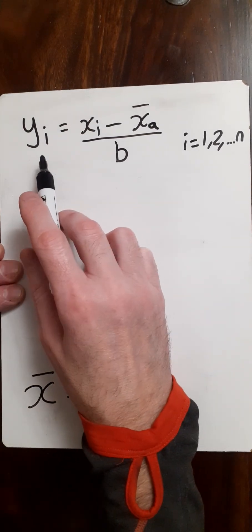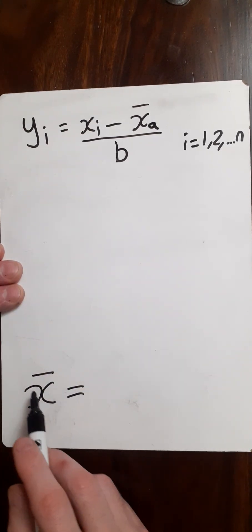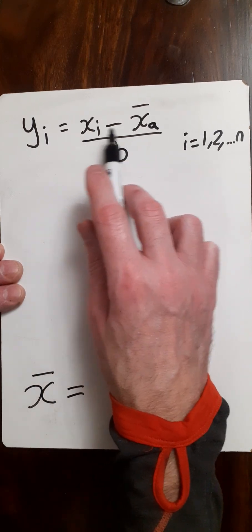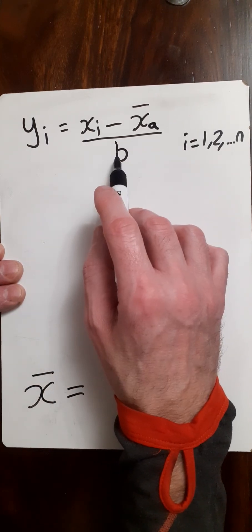So what we want to do here is find the mean of our variables of x from the coding of the data in this format: x minus the assumed mean over some constant b.